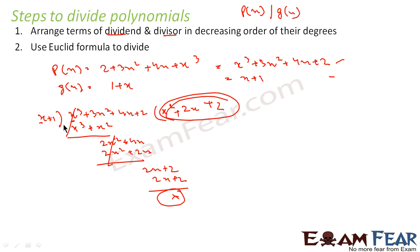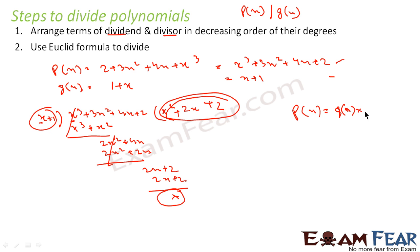So this is my quotient and 0 is my remainder. We are using the Euclid formula — just like dividing a big number by a smaller one. p(x) can be written in the form g(x)·q(x) + r(x), where this is g(x), this is p(x), and this is q(x).